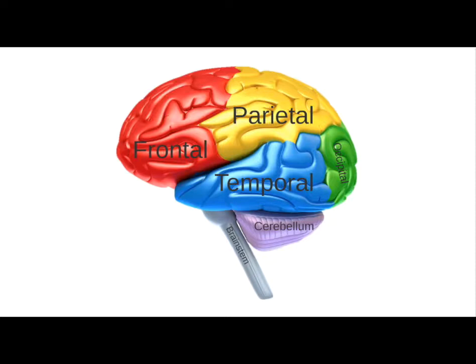Any injury across the board — a traumatic brain injury, a stroke, whether it be ischemic or hemorrhagic, or any neurological dysfunction that might have a lesion or a deficit in any specific region of the brain — will ultimately have similar impairments. So when looking at the neurological population, what we first have to do is understand the neuroanatomy and the pathophysiology of their injury.